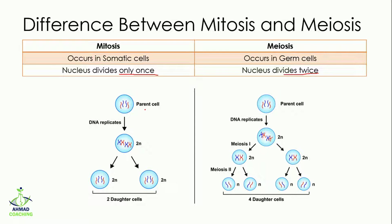In mitosis, the parent cell is present, the DNA is duplicated in the S phase, and then half of the chromosomes move to one cell and the other half move to the other cell. So this nuclear division takes place only once.